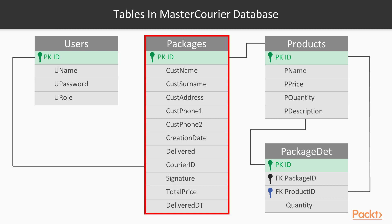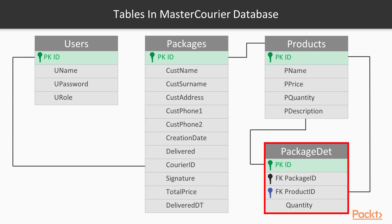In the package table we will have: ID, customer name, customer surname, customer address, customer phone 1, customer phone 2, creation date, when it is delivered, is it delivered, a courier ID to which this package is assigned, signature of customer, total price, and delivery date time. We will also have a package details table with just a few details about the products we will deliver, such as package ID, product ID, and quantity.